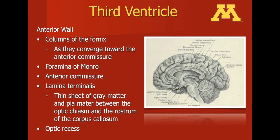Essentially, the lamina terminalis is the front wall of the third ventricle. This is also an important structure when treating aneurysms, especially aneurysms arising off of the anterior communicating artery. Frequently after subarachnoid hemorrhage, a patient may have increased intracranial pressure, and a useful technique is to fenestrate the lamina terminalis and release cerebrospinal fluid, which will decrease intracranial pressure.